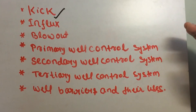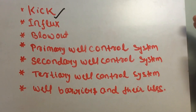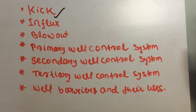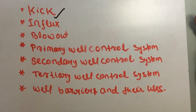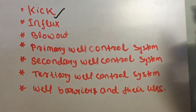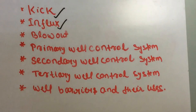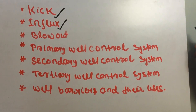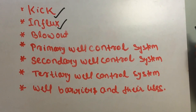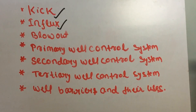Influx occurs when our BHP becomes lower than the formation pressure — when formation pressure exceeds our wellbore or bottom hole pressure. The influx can be oil, gas, or salt water. Next is blowout: it is an uncontrolled flow of formation fluid from the wellbore to the surface — that influx which reaches the surface.